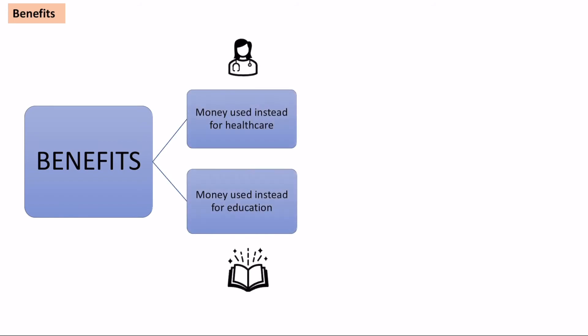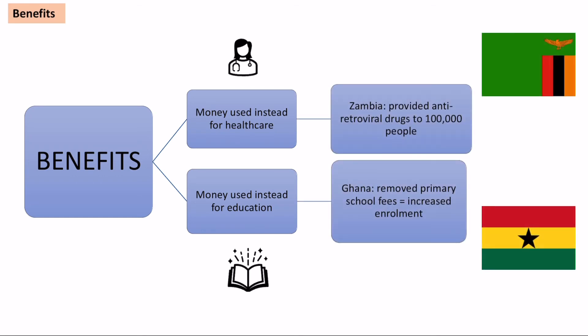Once you take all that debt away, it can obviously have both benefits and negatives. In terms of benefits and reducing the development gap, that money that was going to be spent on debt can actually be used for other things — such as healthcare or education. For example, Zambia spent that money on healthcare, specifically on antiretroviral drugs to help people with HIV. In Ghana, they removed all primary school fees, meaning more young children went to school, which in the long term means a better educated workforce and the ability to develop at a faster rate, especially economically.